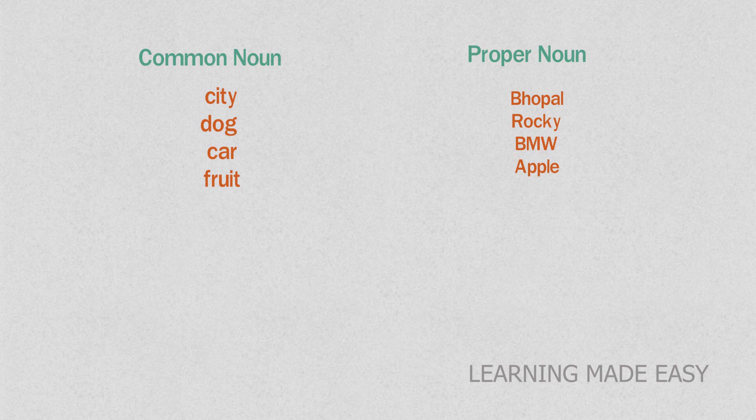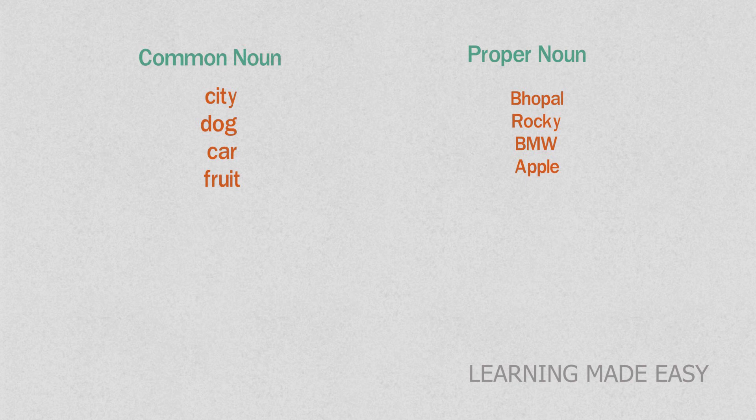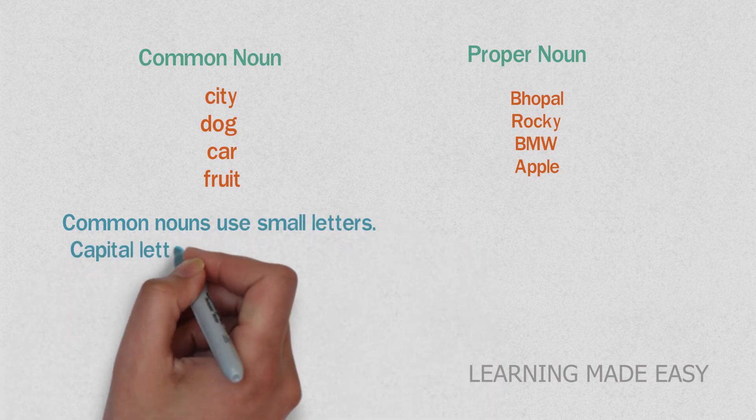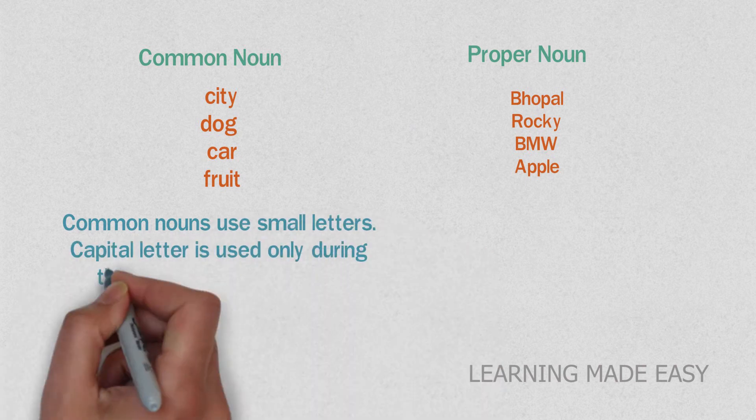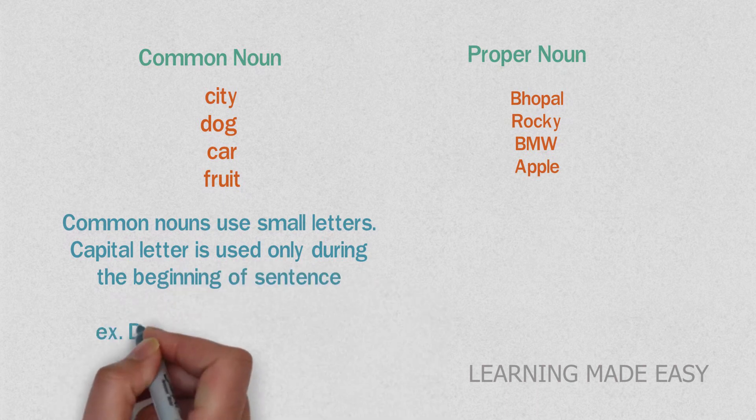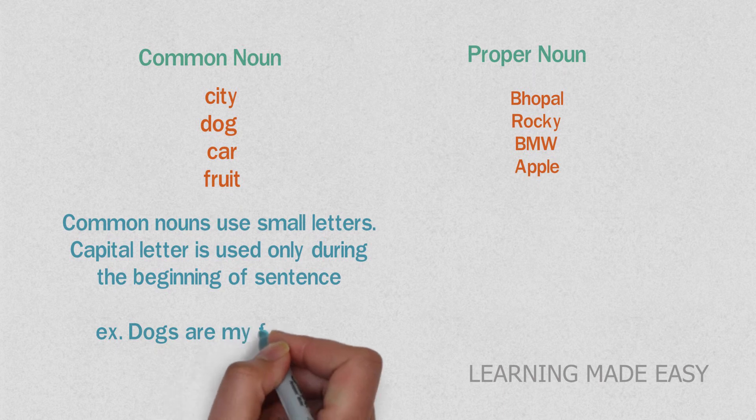So let us see what differentiates between common noun and proper noun. How can we differentiate between common and proper noun? Let's talk about common noun. Common nouns are small letters. Capital letter is used only during the beginning of a sentence.